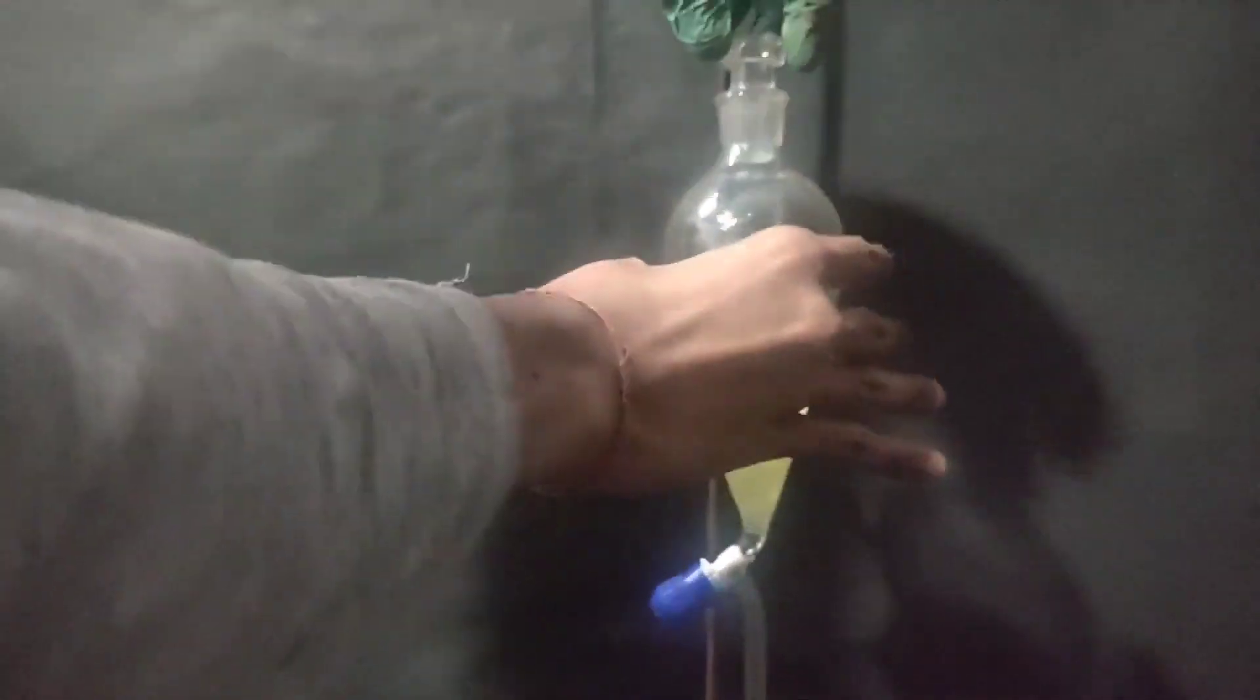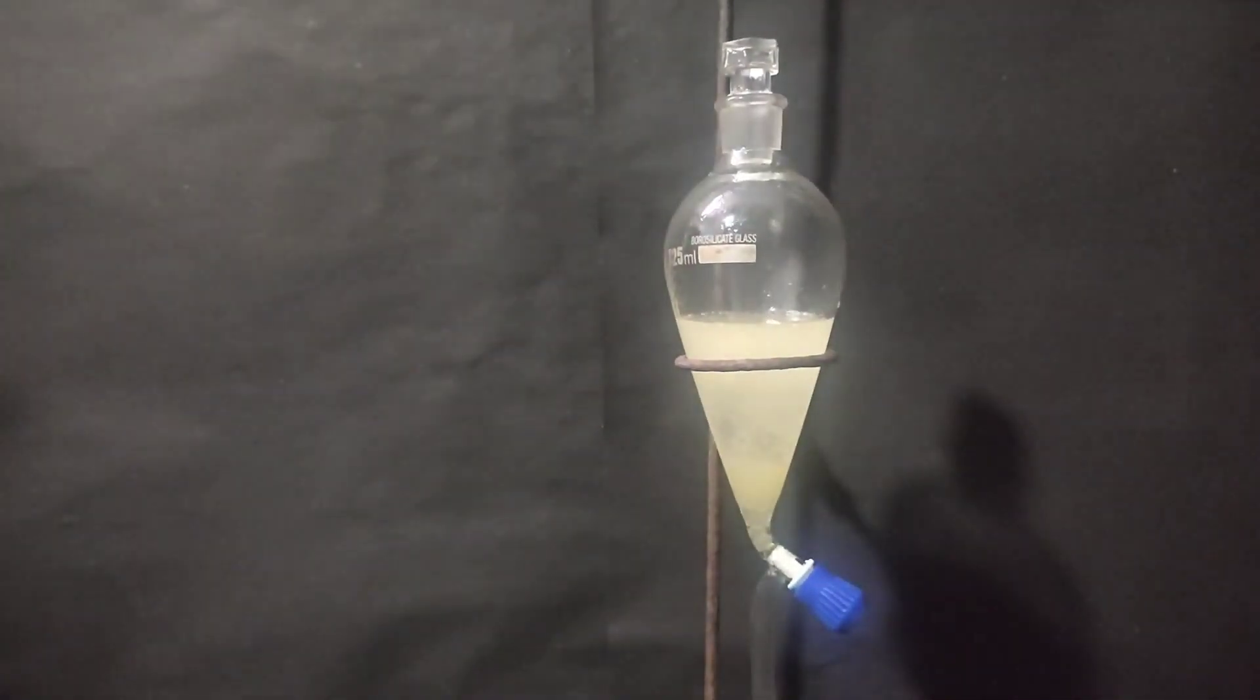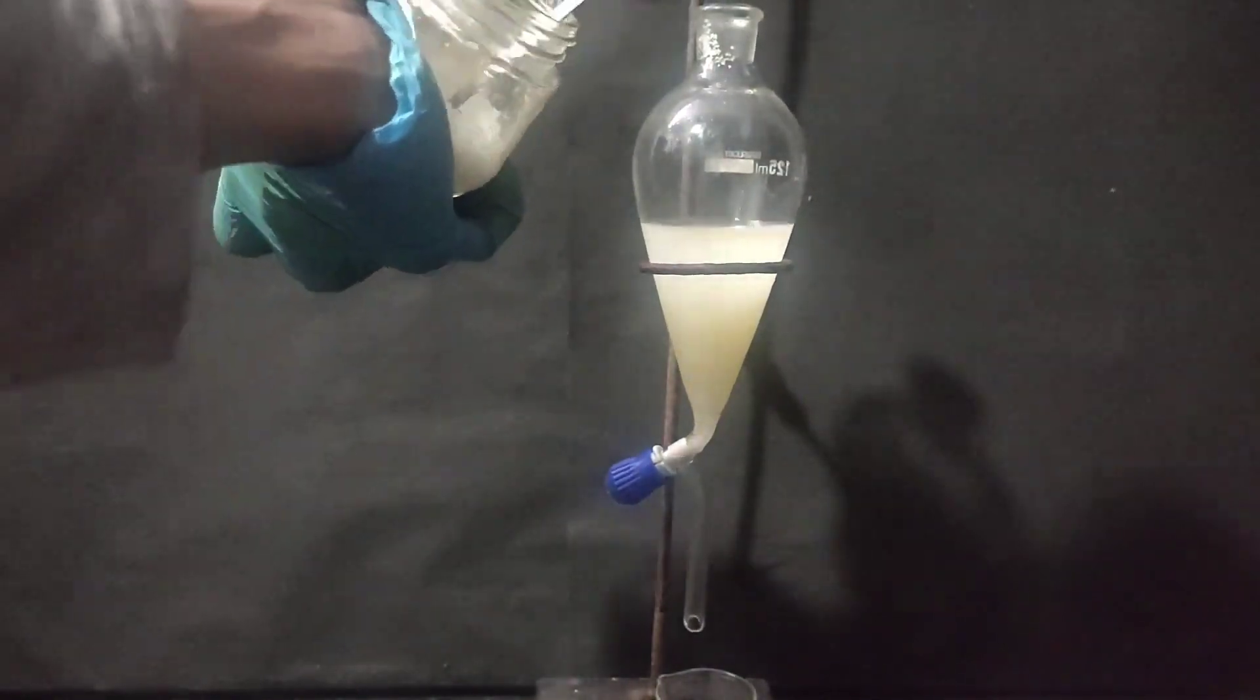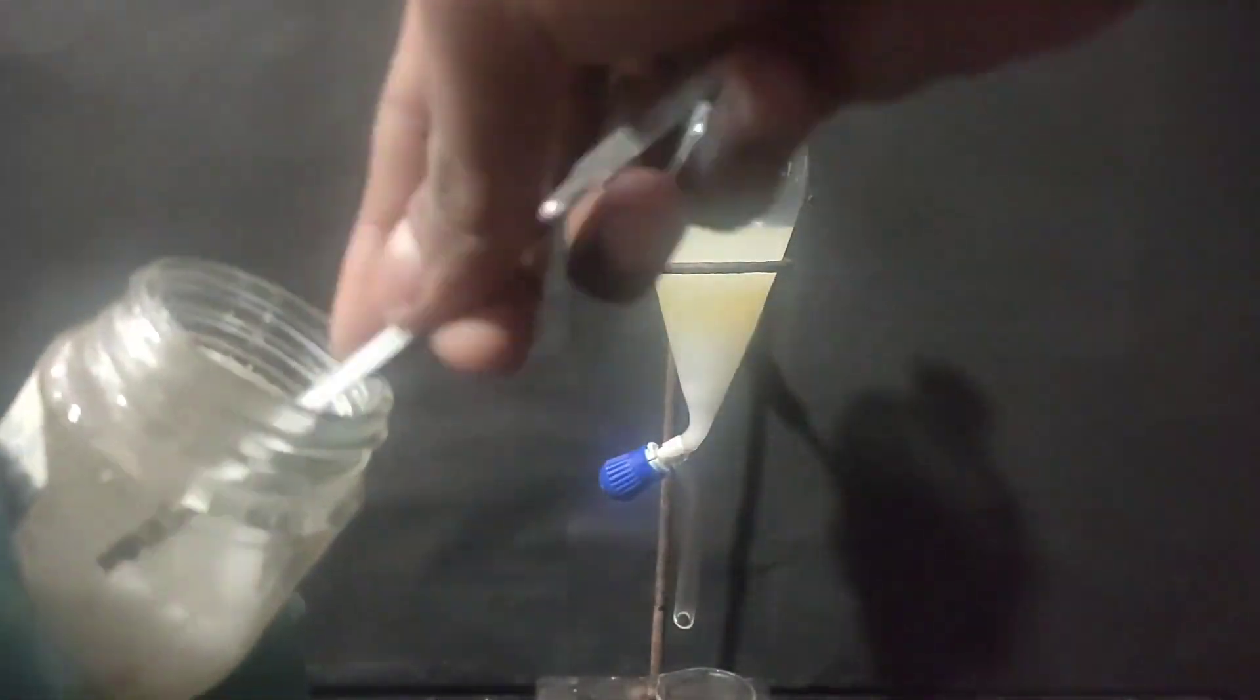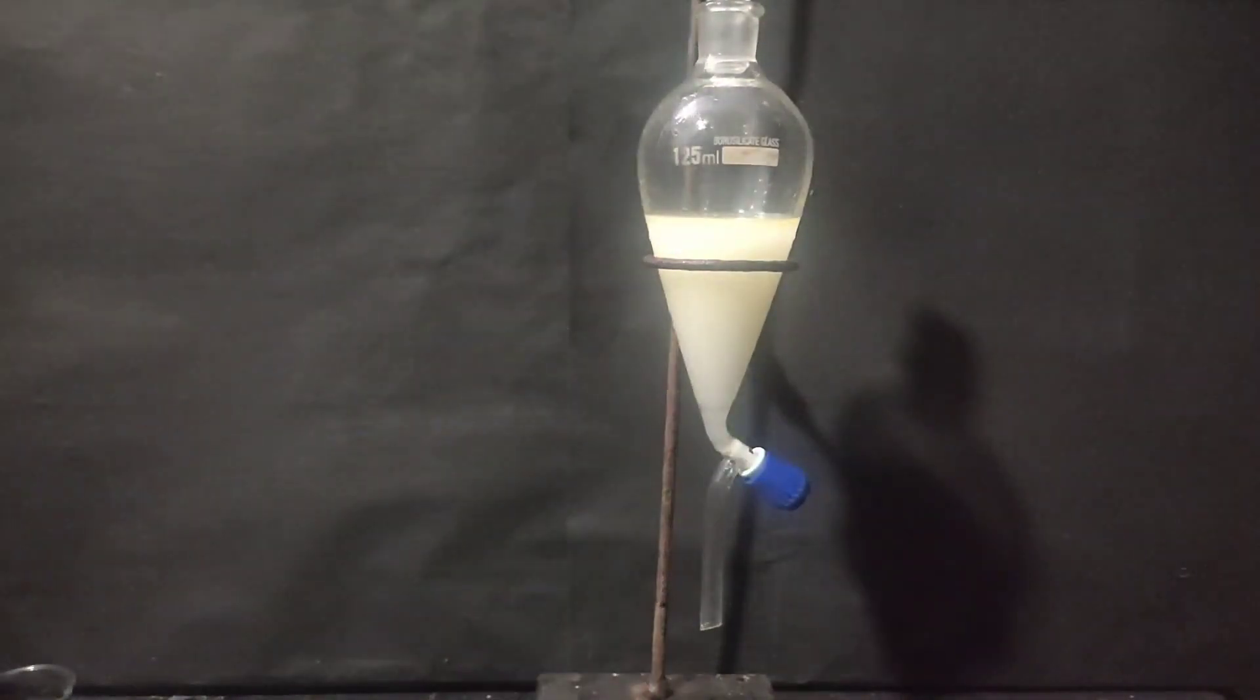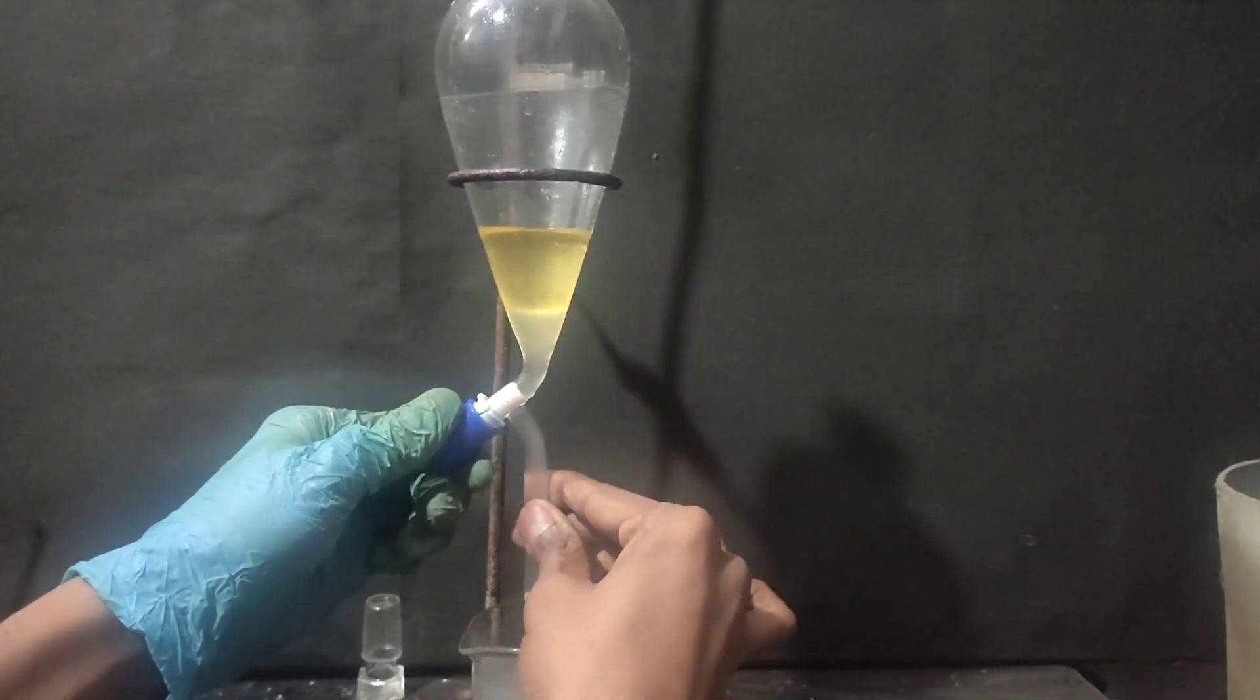But on separation, the benzaldehyde layer was very cloudy. So I added some sodium chloride into the mixture. The funnel was capped, shaken, and vented. Pressure was building up, which indicates benzoic acid and benzaldehyde is still reacting with sodium bicarbonate and releasing carbon dioxide gas. After no more pressure was formed, the layers were allowed to separate.